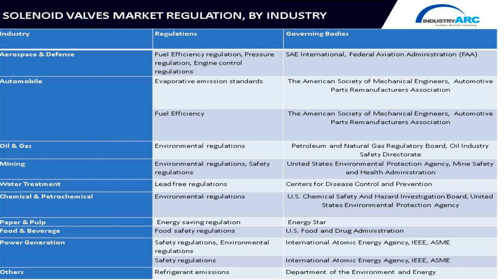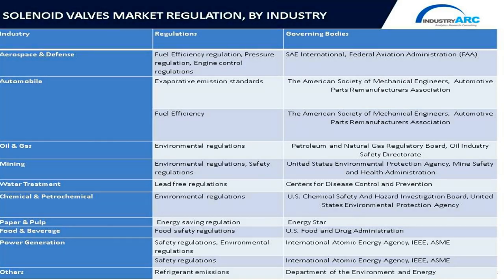For food and beverage, food safety regulations are governed by the US Food and Drug Administration. Power generation includes nuclear, hydraulic, and thermal power plants, where safety and environmental regulations are governed by the International Atomic Energy Agency, IEEE, and ASME.